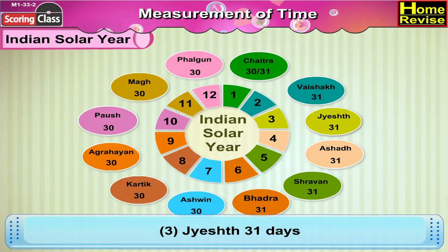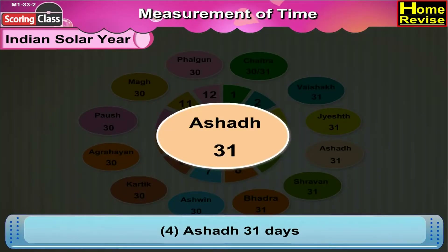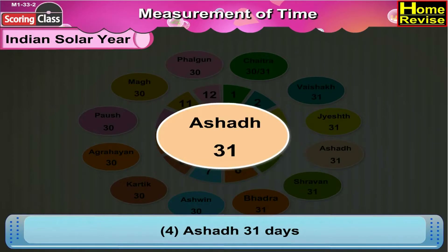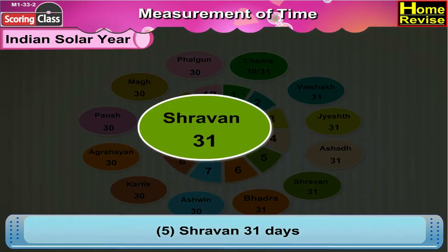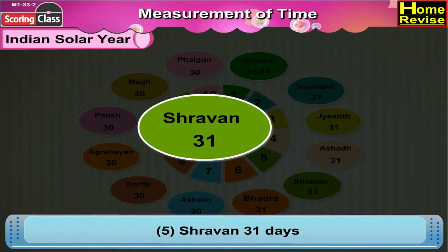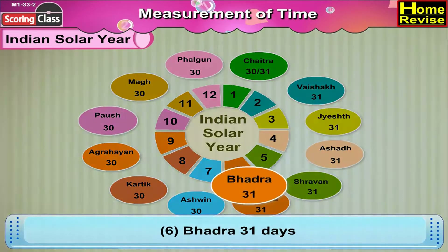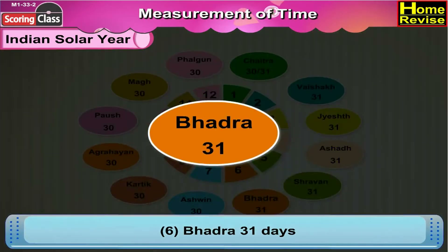The fourth month is Ashar, which has 31 days. The fifth month is Shravan, which has 31 days. The sixth month is Bhadra, which has 31 days.